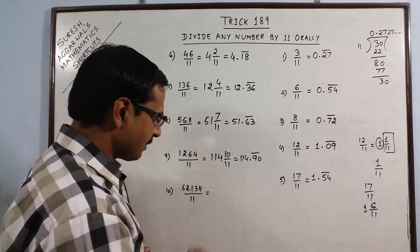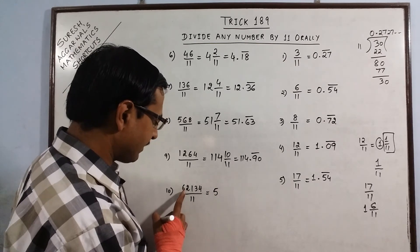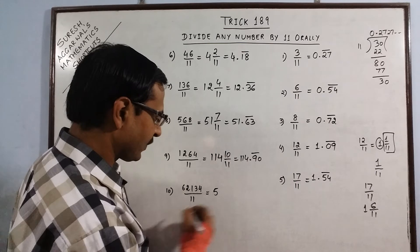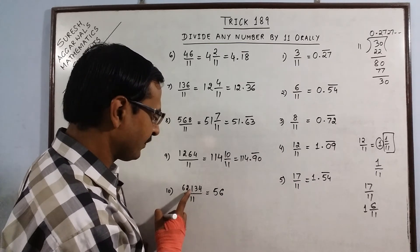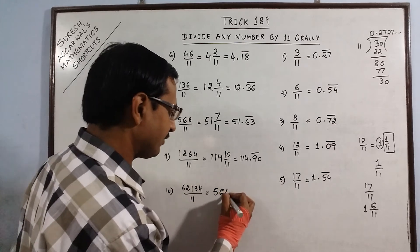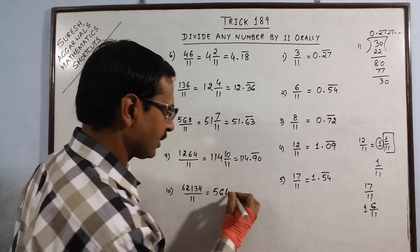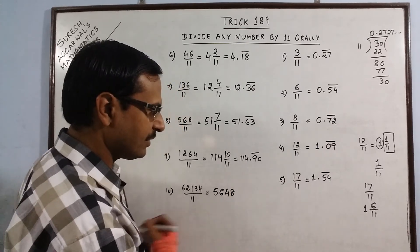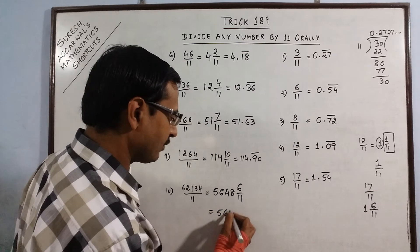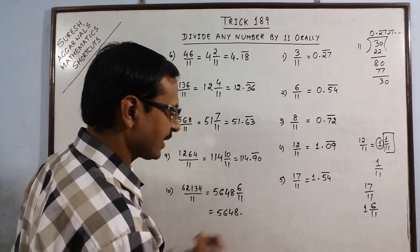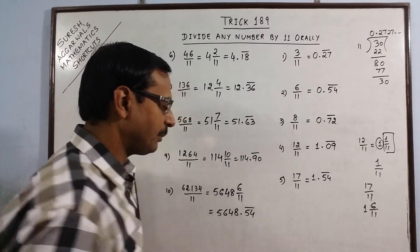For the final example: 11 fives are 55, remainder 7; next 71, 11 sixes are 66, remainder 5; next 53, 11 fours are 44, remainder 9; next 94, 11 eights are 88, remainder 6. So the digits 5, 6, 4, 8 appear before the decimal place. For the remainder 6 upon 11: 6 times 9 is 54, so 54 keeps repeating. The full decimal representation is 5648.54 bar.